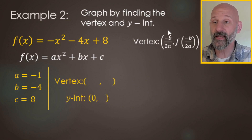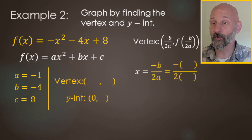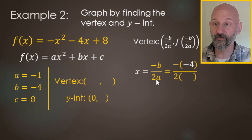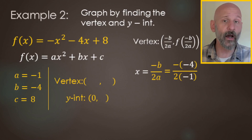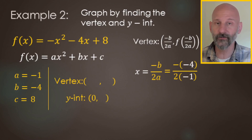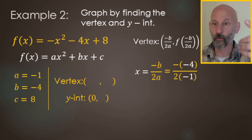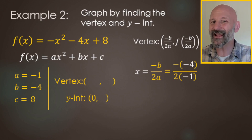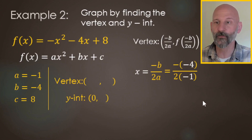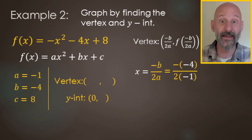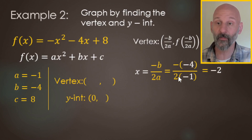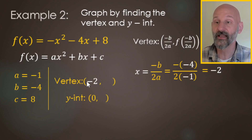For the vertex, the x value is negative b over 2a. b was −4, so we have negative (−4) in the numerator, and a = −1 so the denominator is 2 times −1. Negative of negative 4 is positive 4, and 2 times −1 is −2. Positive divided by negative gives a negative: 4 divided by 2 is 2, so the x value of the vertex is −2.